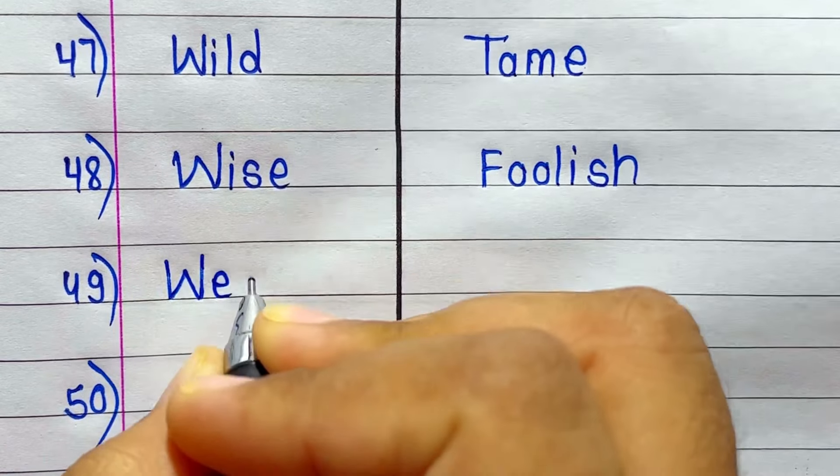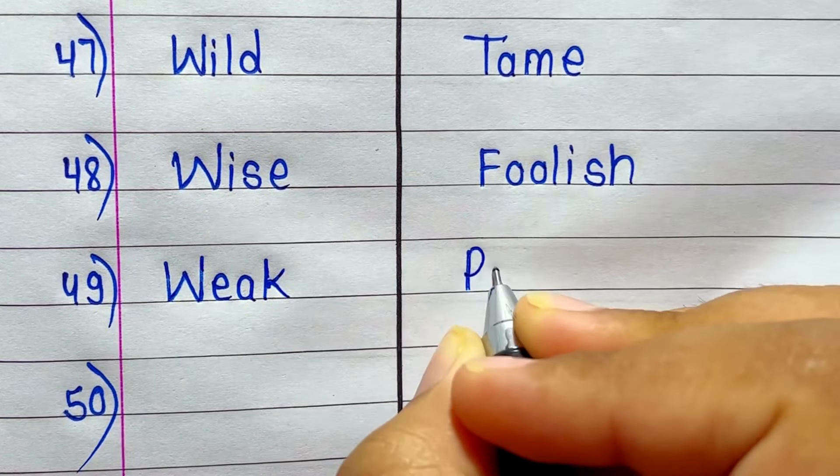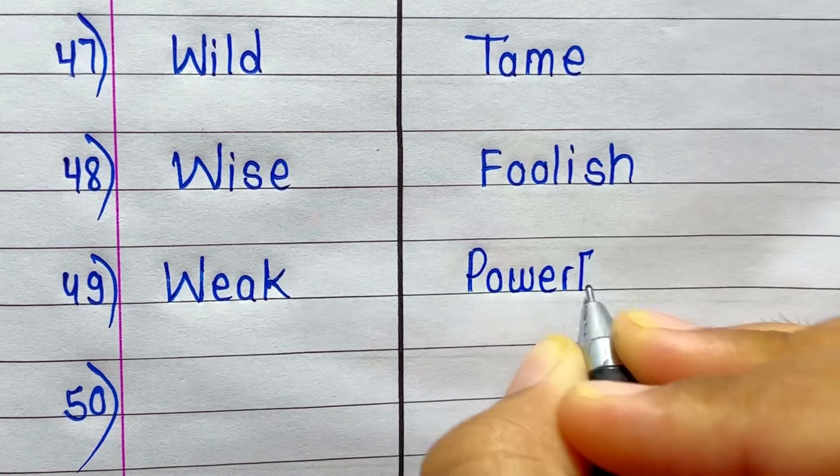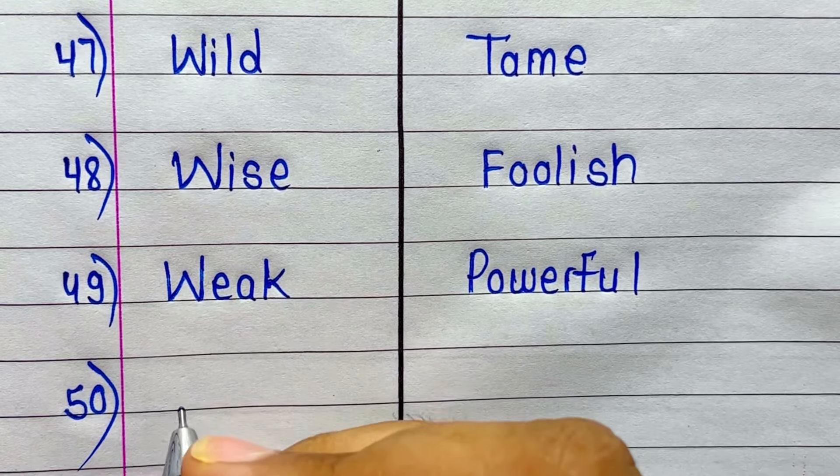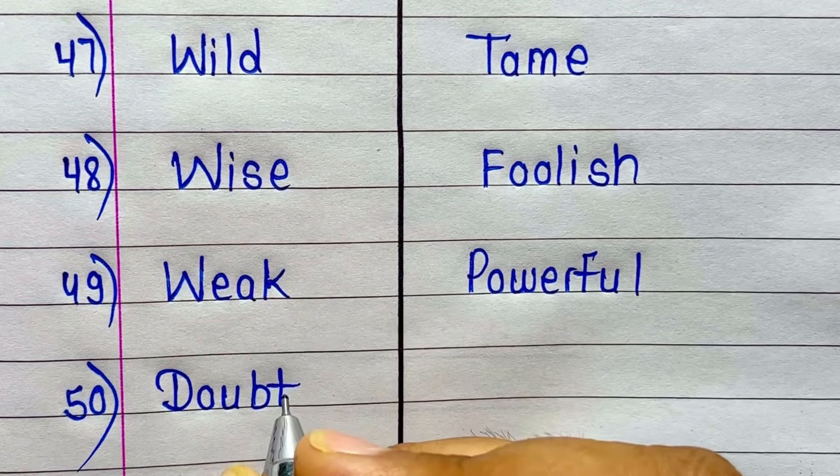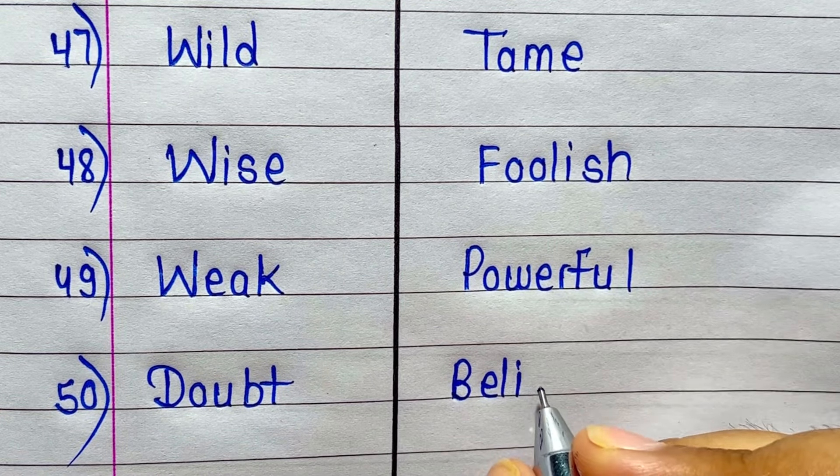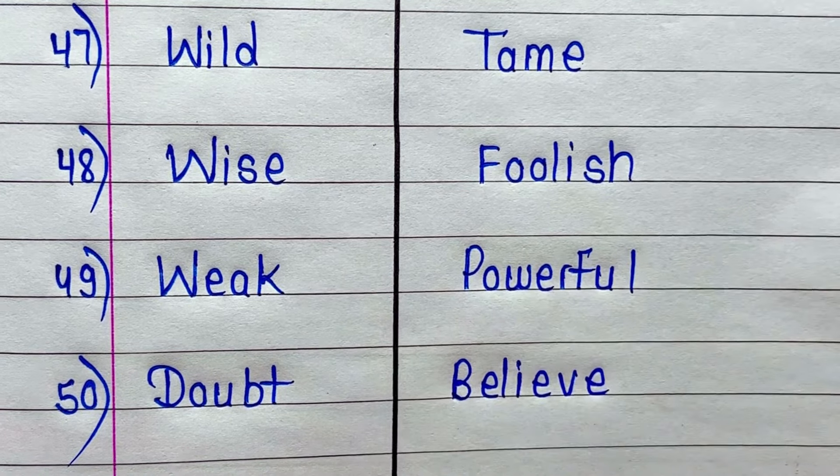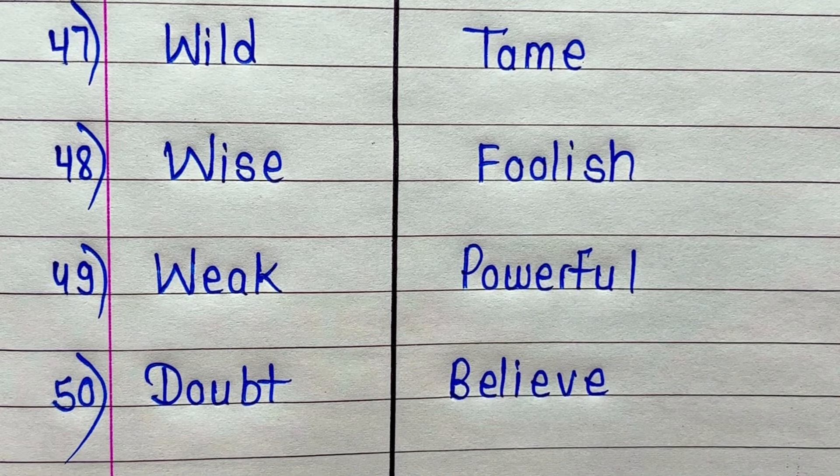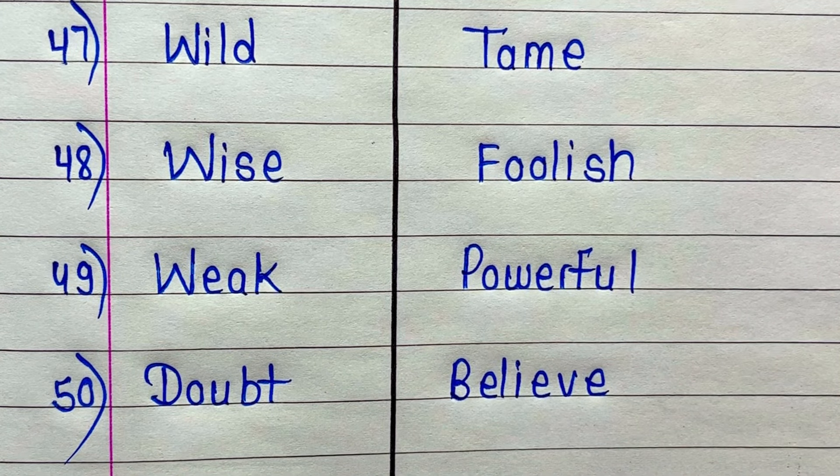Antonym of Weak is Powerful. Last one is Doubt. Antonym of Doubt is Believe. That's all for today. Hope you all like this video. Thanks for watching.